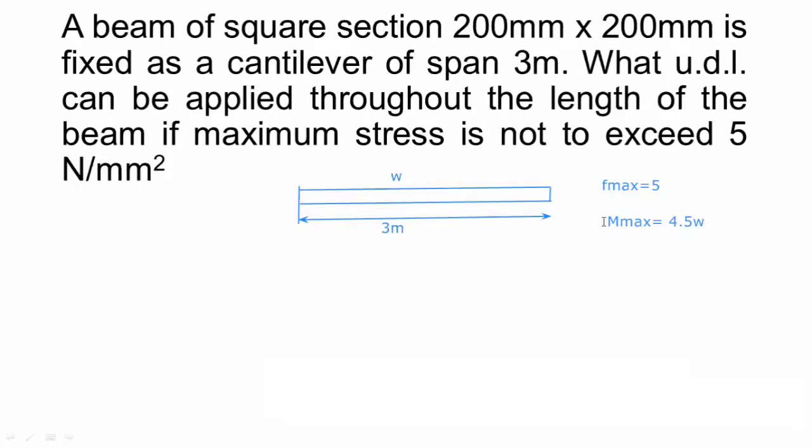Next is beam is of square cross section 200 by 200. And what is my equation of bending stresses? I will just note down here. F upon Y, F by Y is equal to M upon I is equal to E upon R. This is my equation. Here, F max is 5 given. Y is the depth of maximum stress from neutral axis. So if 200 is the depth, Y will be D by 2, which is 100. So I know now what is Y value.